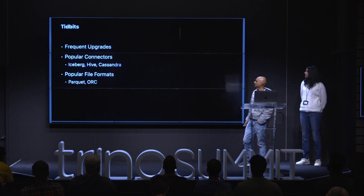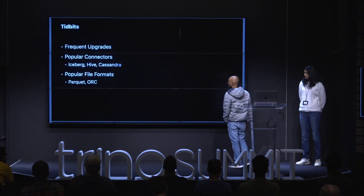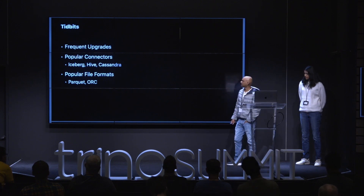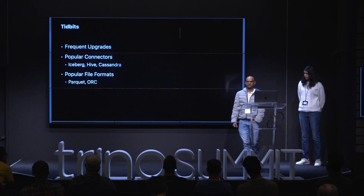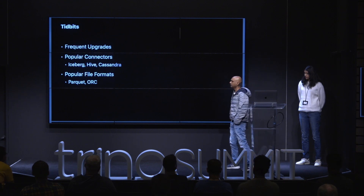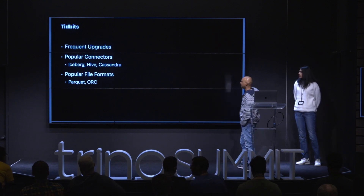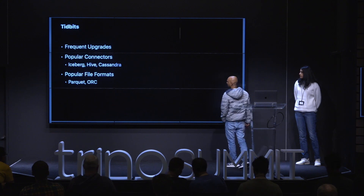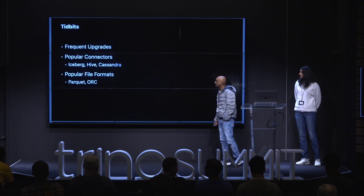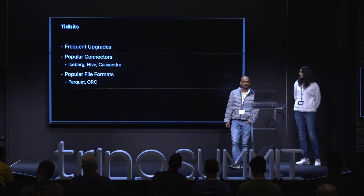Some tidbits about our Trino deployment: we try to keep up with open source releases and do frequent upgrades for Trino versions. We have various connectors at Apple — the most popular are Iceberg, Hive, and Cassandra. The most popular file formats are Parquet and ORC, and we are pursuing efforts to improve the read performance of Parquet readers in Trino.